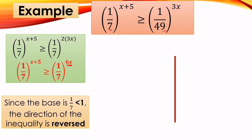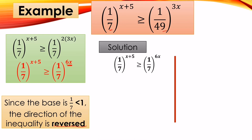Since the base is 1/7, which is less than 1, the inequality is reversed — the symbol changes. From greater than or equal to, it becomes less than or equal to. Equating the exponents: x + 5 ≤ 6x.